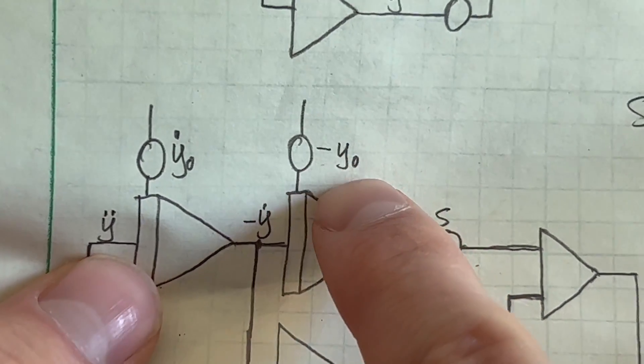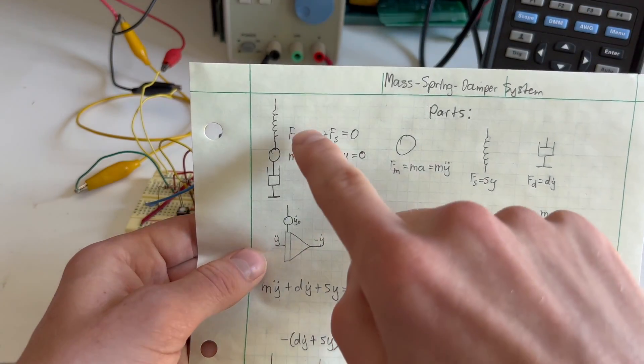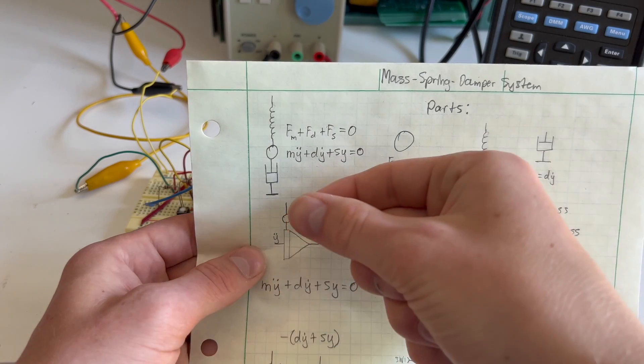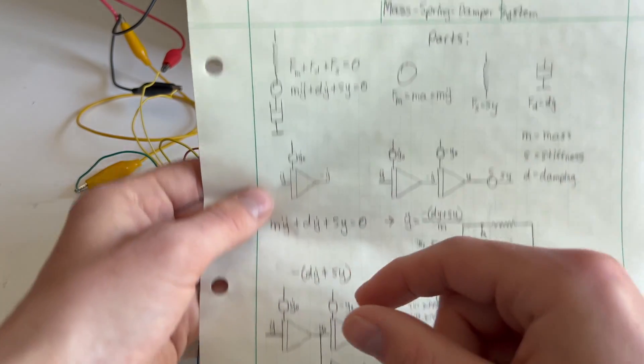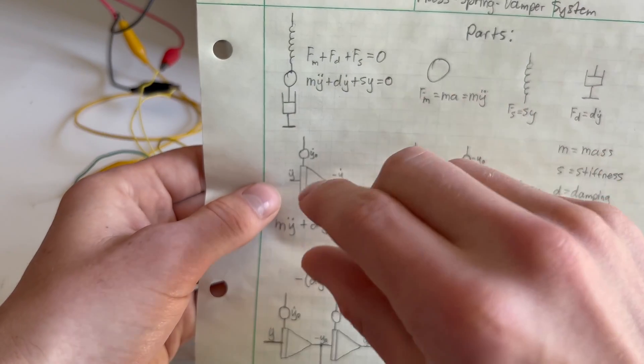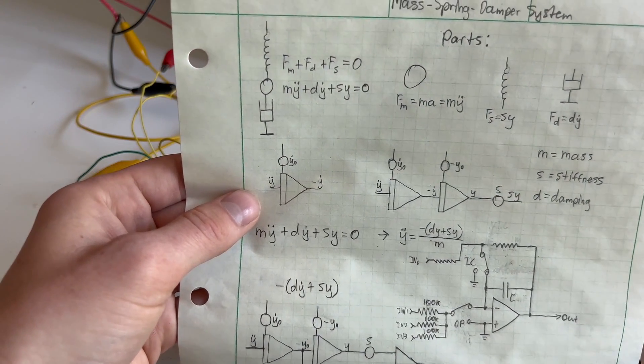This one is the displacement of the spring. So if you're pulling the mass down, how far you pull it down to begin with, that's that initial condition. I think this other one is like how far the damper is pressed or something like that. I'm not entirely sure.